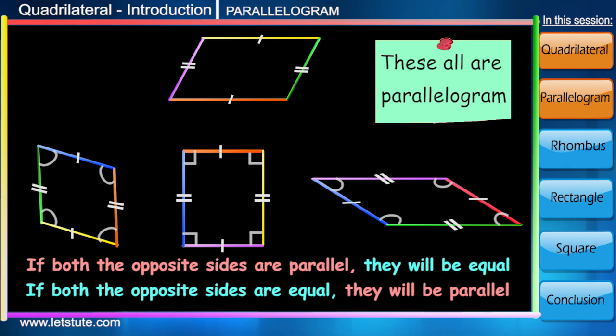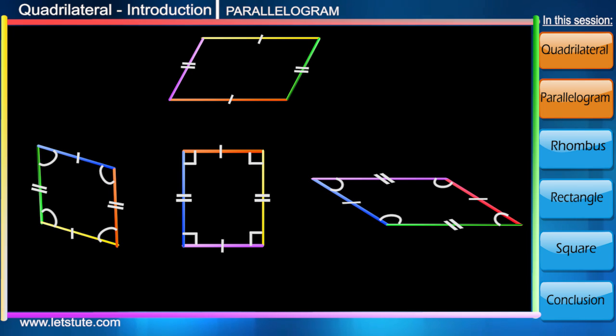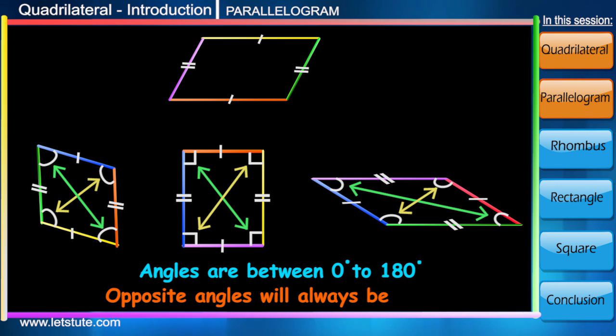Let's have a look at the angles. We can say that there is no specific measurement, so we say that a parallelogram may have any angles between 0 to 180 degrees.